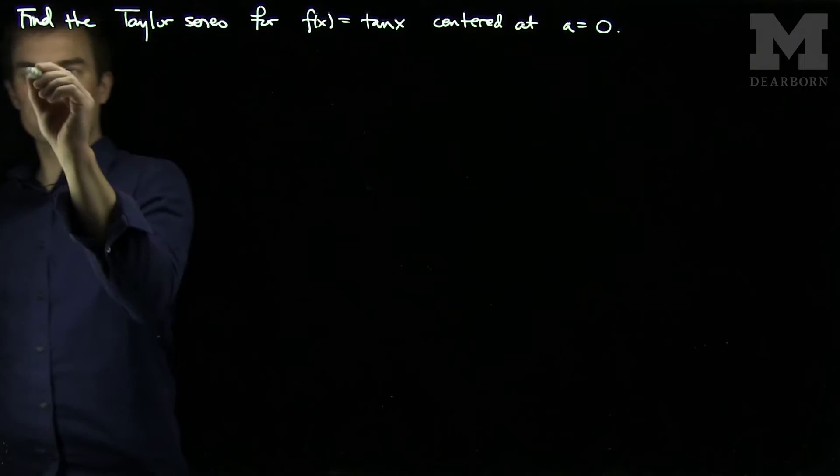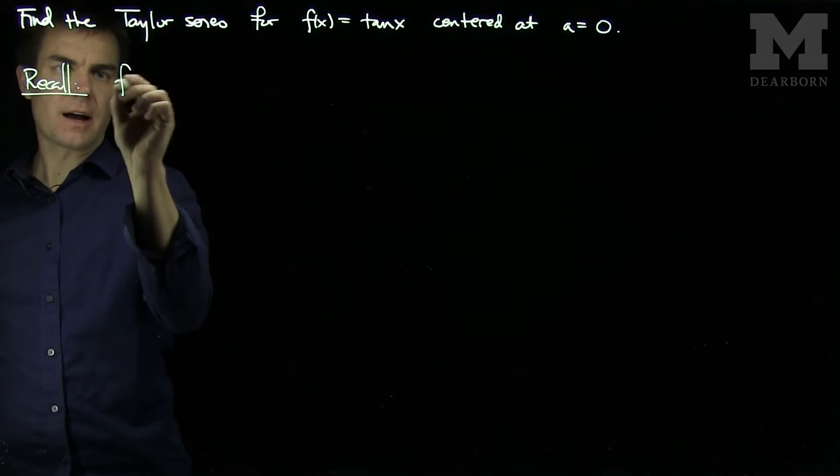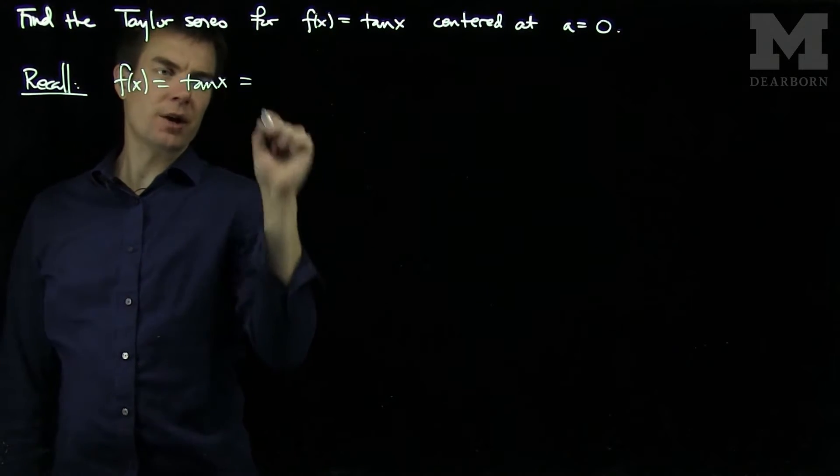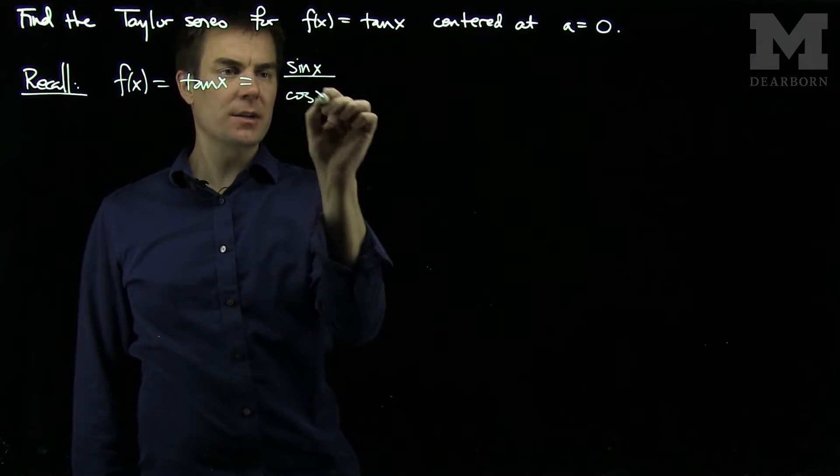And so for this problem, we should recall that f of x, the tangent of x, is the ratio of sine and cosine. Sine x over cosine x.